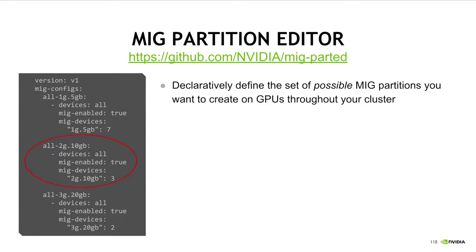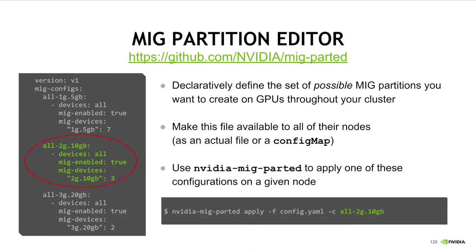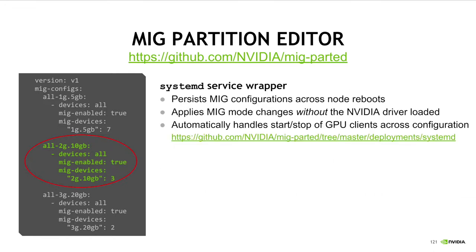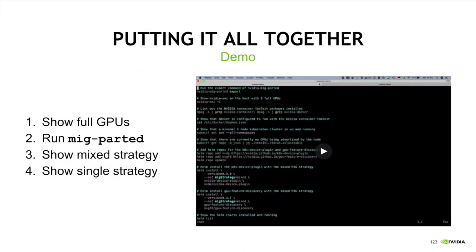Using MIG Parted, one can declaratively define all of the possible MIG configurations they may want to apply to different nodes around their cluster. They can then make this file available to all of their nodes and run a simple NVIDIA MIG Parted command to apply one of the configs from this file. In addition to this base partitioning tool, we also provide a systemd service wrapper that can persist MIG configurations across node reboots, apply MIG mode changes without the NVIDIA driver being loaded, and automatically handle the start and stop of any GPU clients across a configuration. We are also planning on releasing a Kubernetes service wrapper soon, which will become one of the core components of the NVIDIA GPU operator.